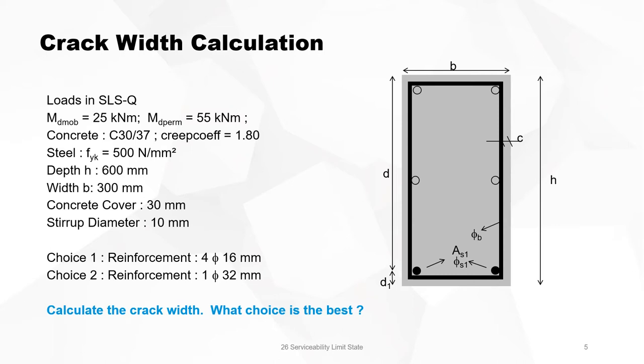We have a section with a depth of 600 and a width of 300 mm, a concrete cover of 30 and a stirrup diameter of 10. The section is loaded with a bending moment of 25 kNm under mobile loads and 55 kNm under permanent loads. The loads are given in SLSQ. Concrete quality is C30/37 and the creep coefficient is 1.8.